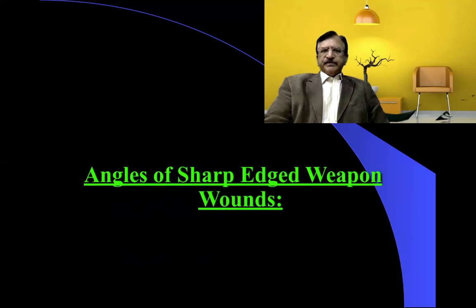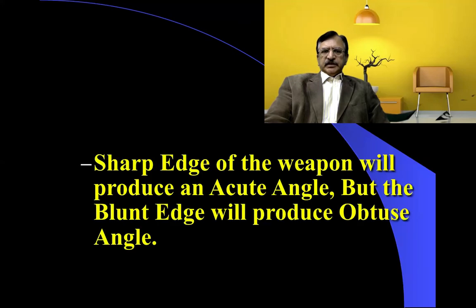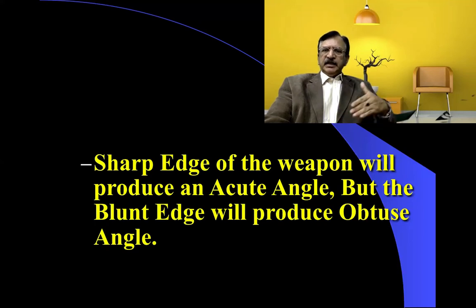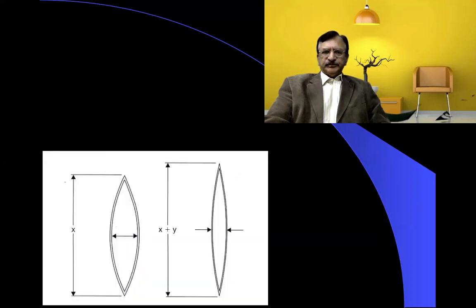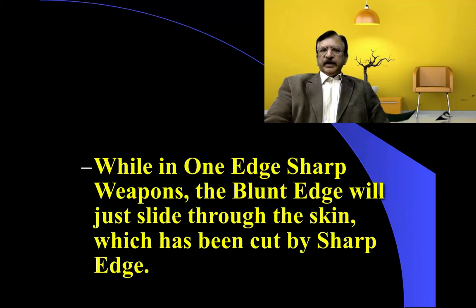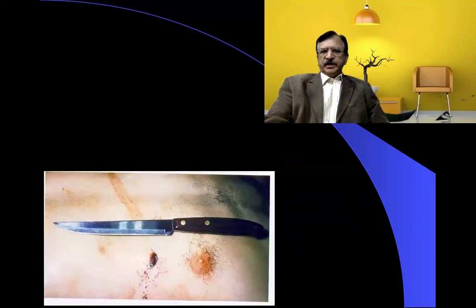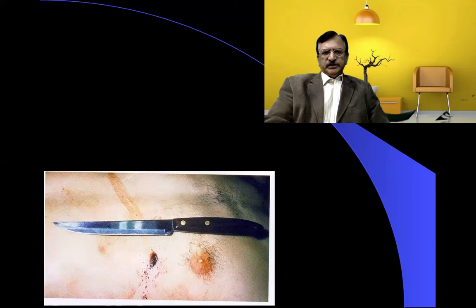Regarding the angles of the stab wound entry: a sharp-edged weapon produces an acute angle, while a blunt edge produces an obtuse angle — as seen with a kitchen knife which has one cutting edge and one blunt end. In a double-edged weapon, both angles will be acute. In a single-edged weapon, the sharp edge produces an acute angle and the blunt edge produces a wedge-shaped injury.